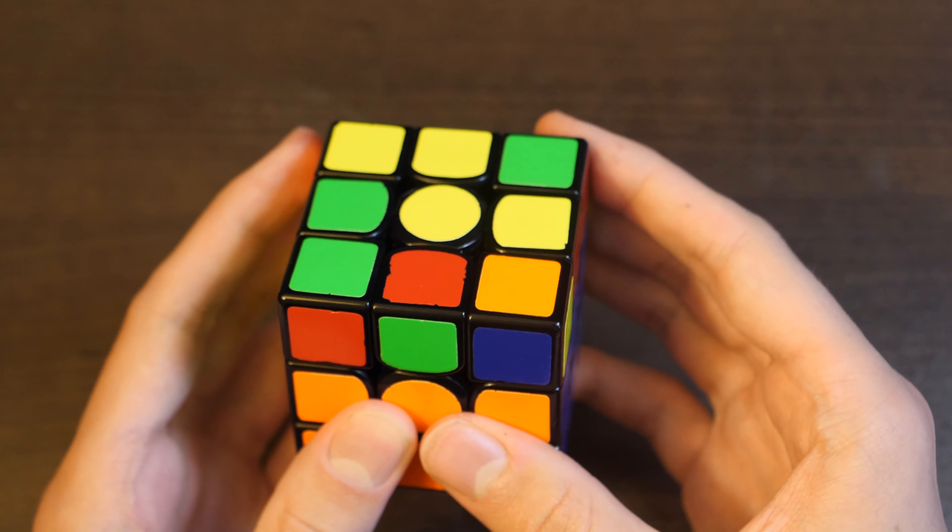The way he does this is he first solves these two relative to each other, then he solves these two relative to each other making them opposite. Then he gets both of them out of the way to finish off the cross with a D2 and then brings these both down to solve the cross.